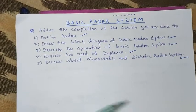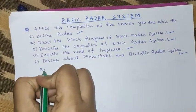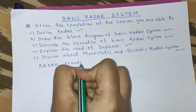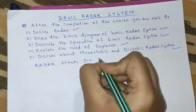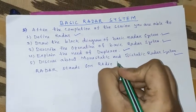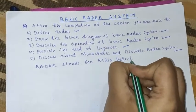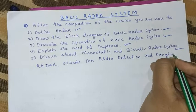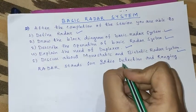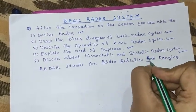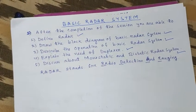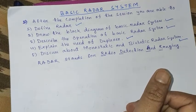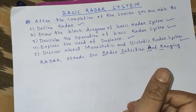First we discuss what is radar. Radar stands for radio detection and ranging. Radar is a detection system that uses radio waves to determine the range, angle, or velocity of objects.